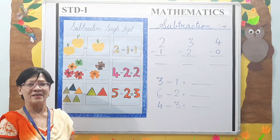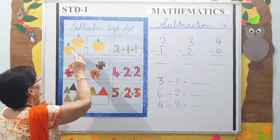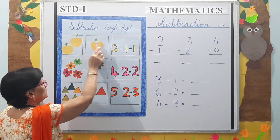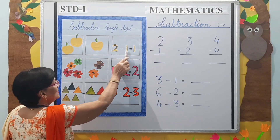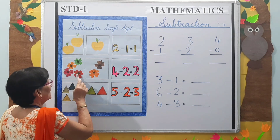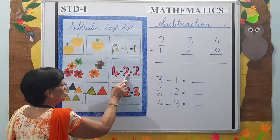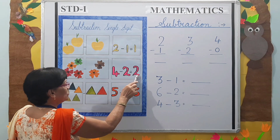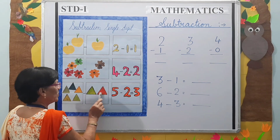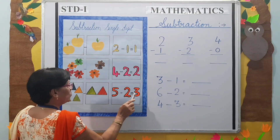Our next topic is subtraction. 2 apples minus 1 apple — 2 minus 1 equals 1. 4 flowers minus 2 flowers — 4 minus 2 equals 2. 5 triangles minus 2 triangles — 5 minus 2 equals 3.